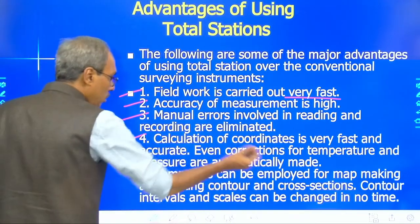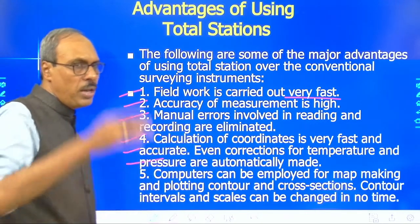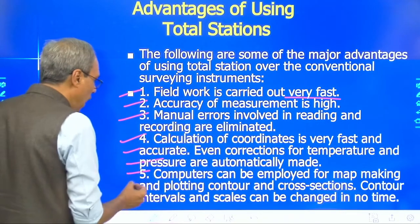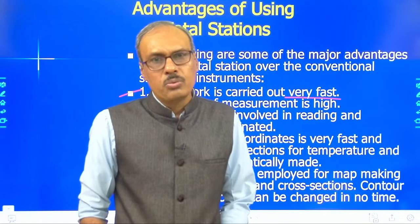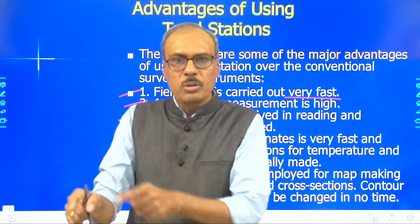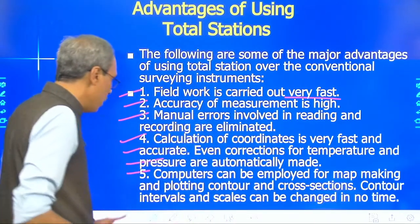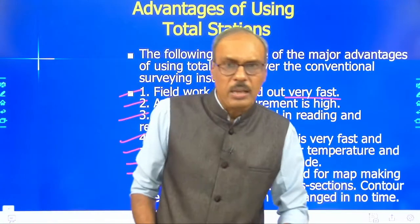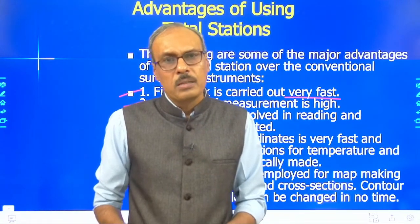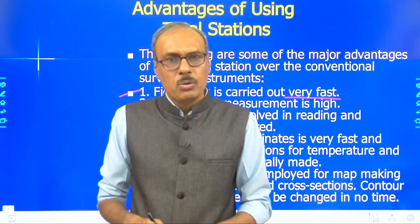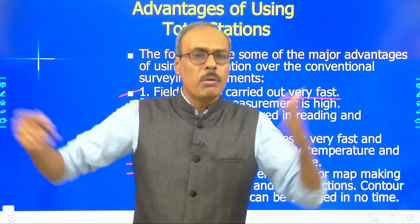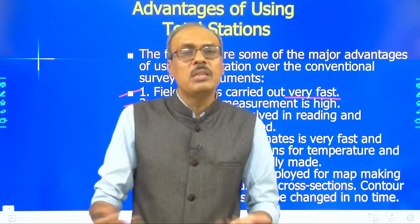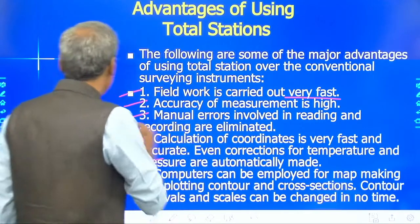Temperature and pressure corrections are also made automatically. Computers and software can be employed for map generation instead of manual drafting. Contour maps, cross-sections, and longitudinal sections can be plotted at any specified interval automatically — requiring far less time than manual interpolation and plotting. These are the major advantages of using the total station for surveying.